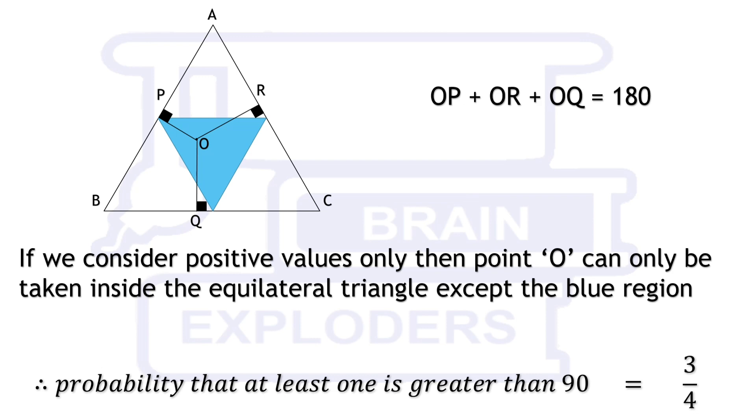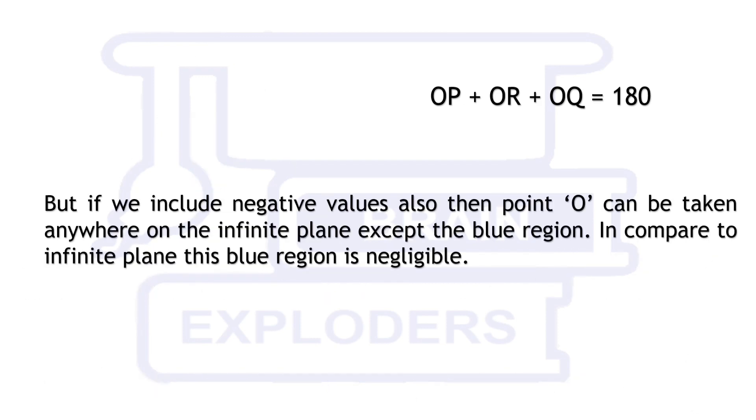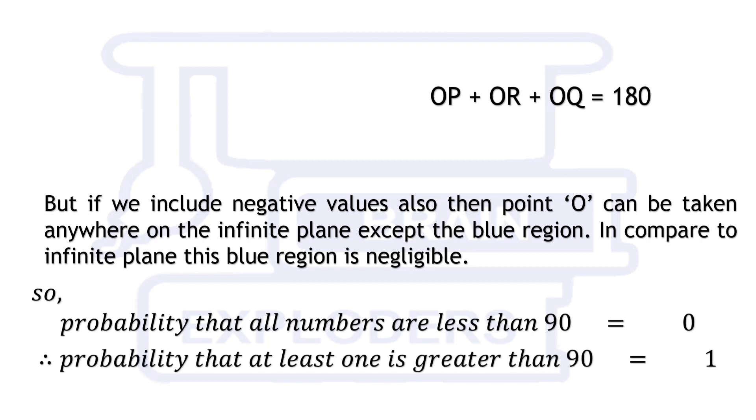But if we include negative values also, then point O can be taken anywhere on the infinite plane except the blue region. In compare to infinite plane, this blue region is negligible. So probability that all numbers are less than 90 is 0, and therefore the probability that at least one is greater than 90 is 1.